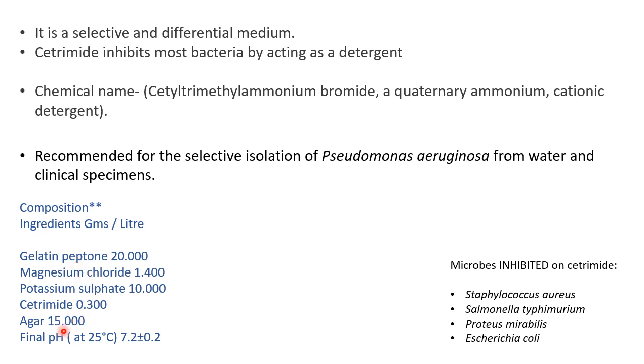The pH of cetrimide agar is neutral to alkaline, that is 7.2 ± 0.2.